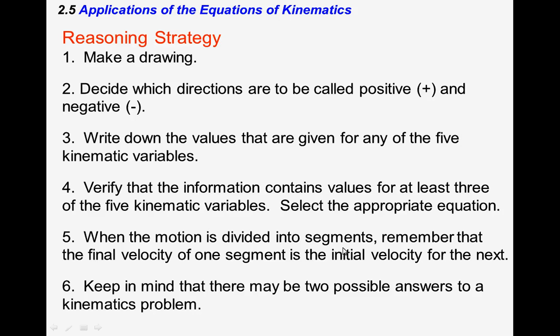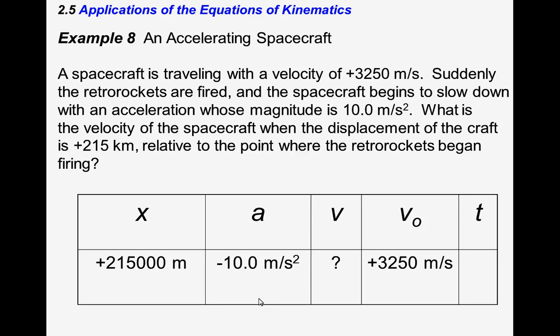When motion is divided into segments, the final velocity of one segment is the initial velocity of the next. Also, kinematics problems can have two possible answers. For example, the square root of four is plus or minus two. When you take a square root in a kinematics problem, you must use your understanding of the situation to decide which answer is physically correct.